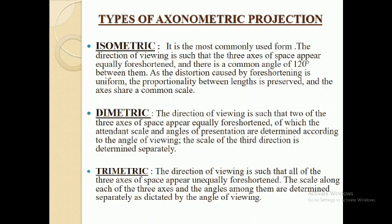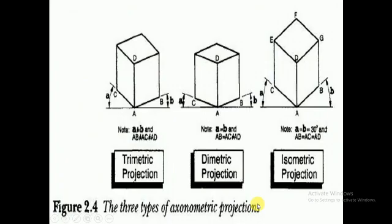In trimetric projection, the direction of viewing is such that all three axes of space appear unequally foreshortened, and the scale along each axis and the angles among them are determined separately as dictated by the angle of viewing. In the diagram showing all three types: in isometric, A and B are equal and larger; in diametric, A and B are equal to each other; and in trimetric, A is not equal to B.